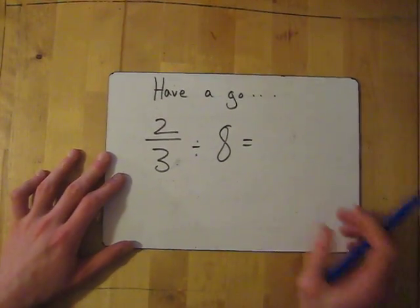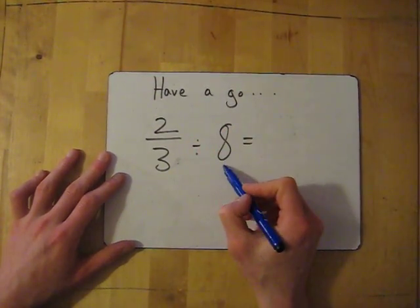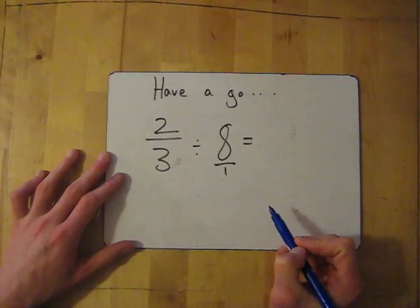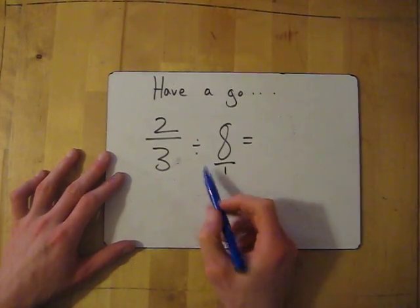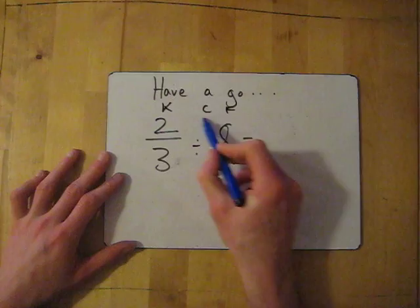So 3, 2, 1. Right. So change this into a fraction first. So it's 8 over 1. Then all we do is KCF. Keep, change, flip.